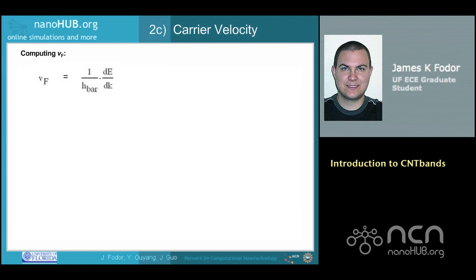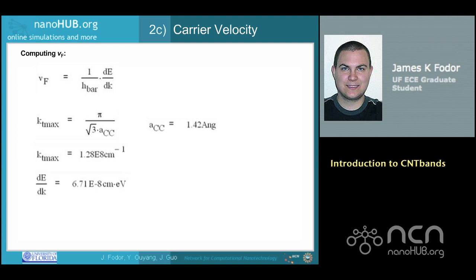To calculate the carrier velocity near the Fermi level, v_F, we need to evaluate the derivative of E(k) with respect to k. The graph found in part A can be used to extract this derivative, which is the slope of the E-K relation near the Fermi level where E equals 0. We will need to find the normalization factor kT_max, which is computed from the following equation, giving a kT_max of 1.28E8 per centimeter. Taking dE/dk as the slope near E equals 0 times kT_max gives dE/dk equal to 6.71E-8 centimeter electron-volts, which gives a carrier velocity of 1.0E8 centimeters per second.